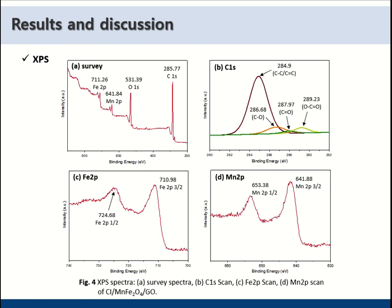Figure 4 is XPS spectra. Here A shows the survey spectrum result of the MnFe2O4/rGO composite, and it can be seen that the composite comprises C, O, Mn, and Fe elements.